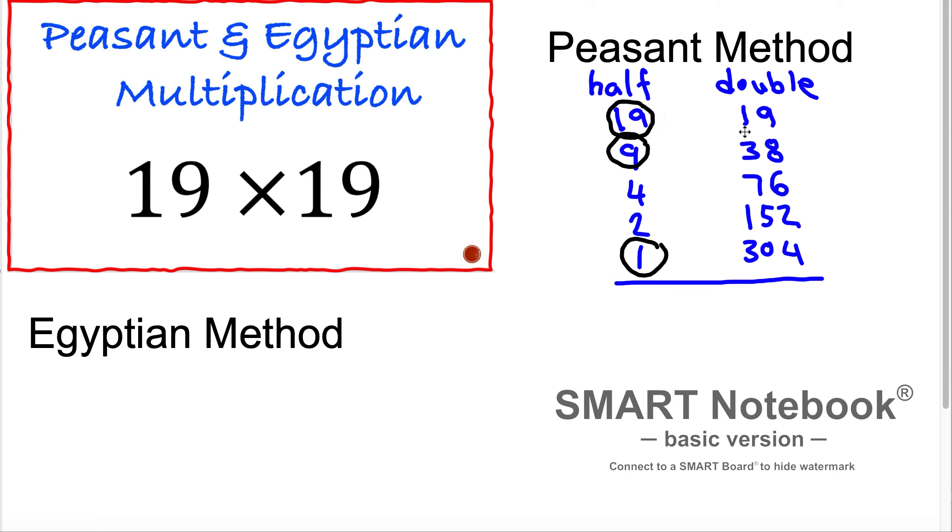And we are taking those double values here. 19 plus 38 because 9 is 38, and 1 is 304 plus 304. If we are adding together it is going to be 361.